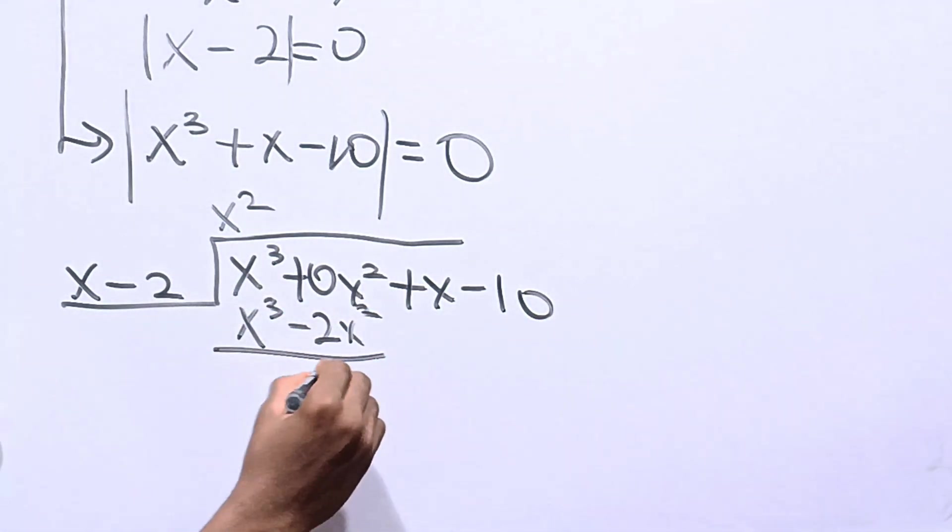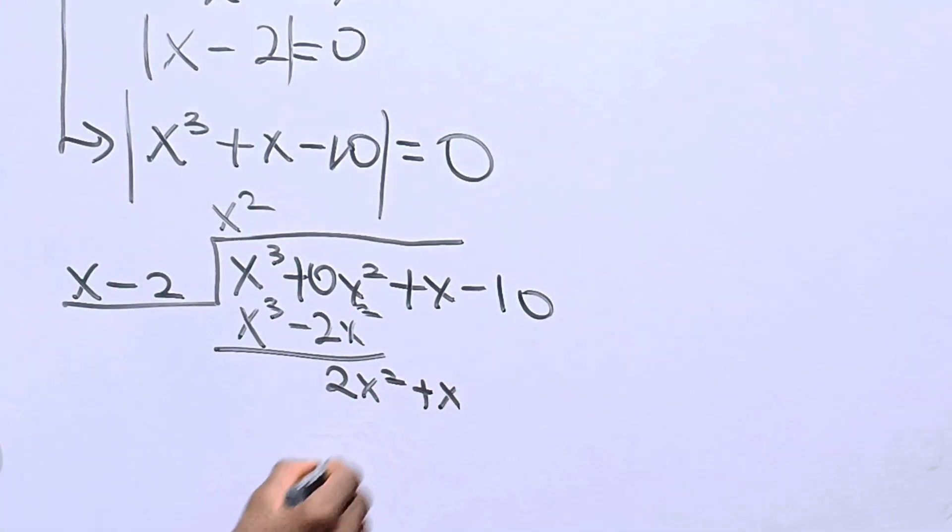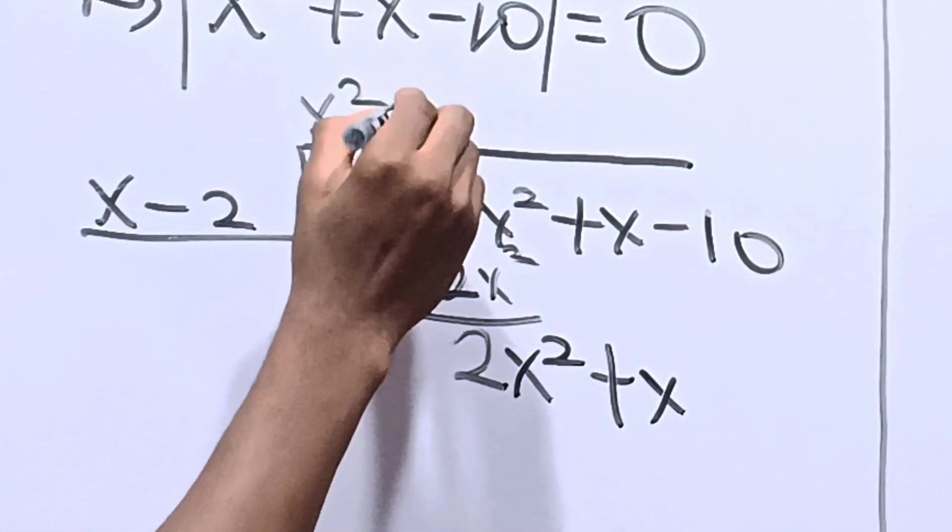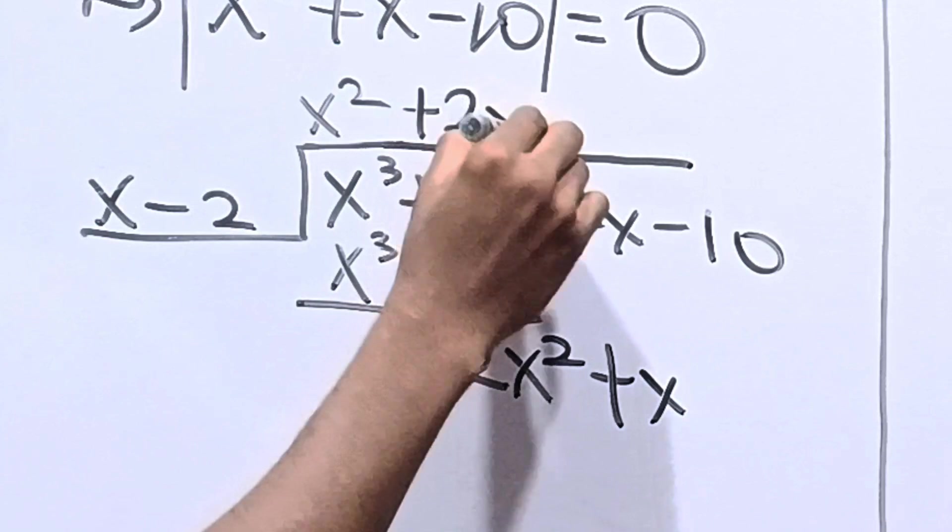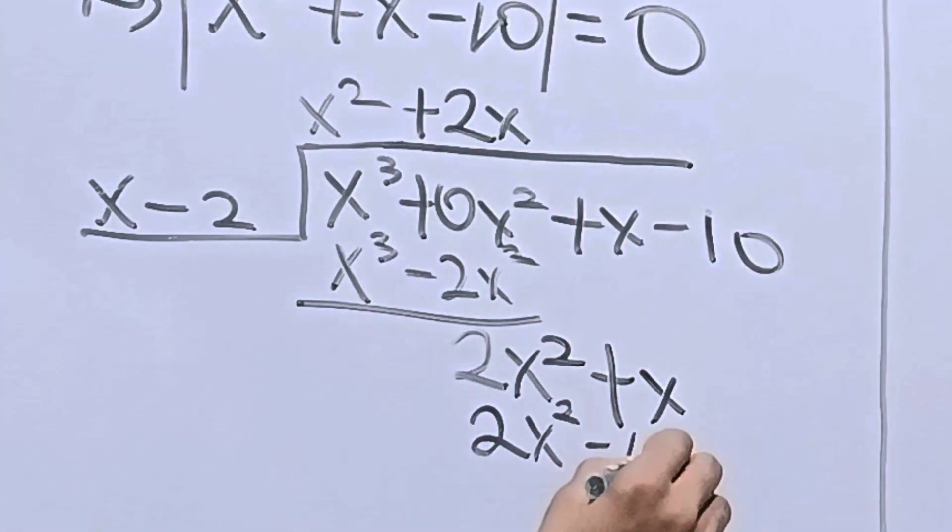Subtracting, we have plus 2x squared plus x. This dividing again will give us plus 2x. And then we multiply, we have 2x squared minus 4x.